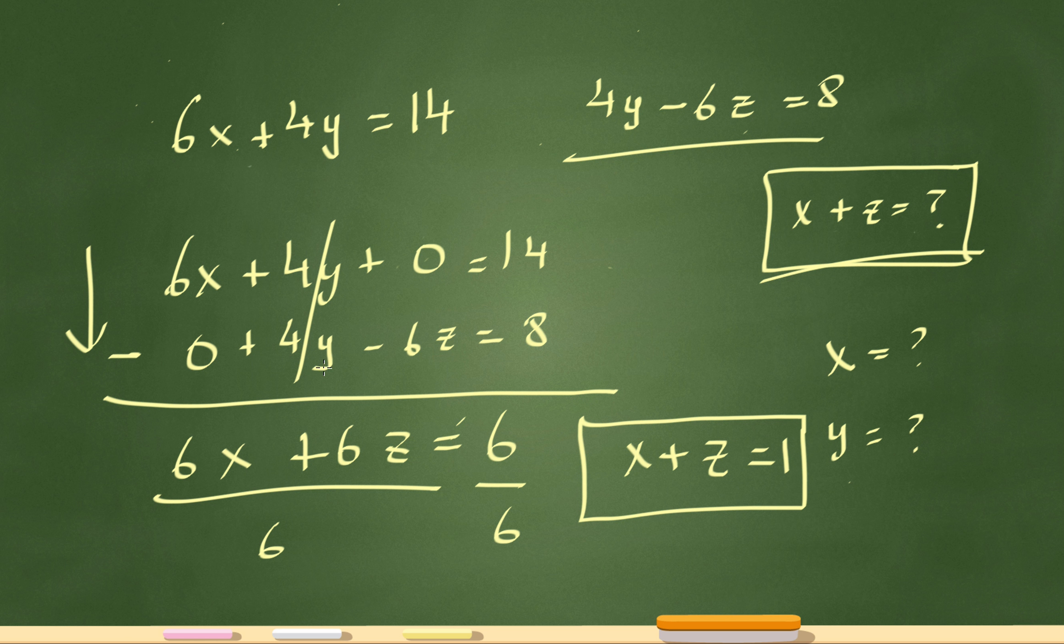But now I lined up the 4y and the 4y and I was just trying to get rid of the 4y's over here. So I subtracted everything down. 6x minus zero is 6x. 4y minus 4y over here.